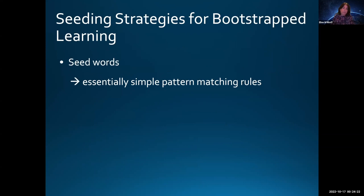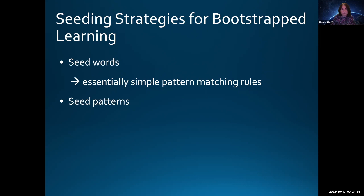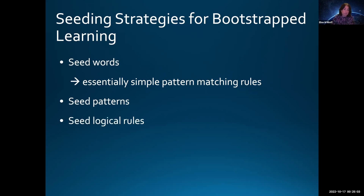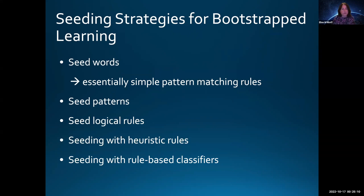Bootstrap learning strategies have to get started with some human data, and that's where the rules come in. There are many different strategies that have been used. One of the most common is seed words—that's really just a very simple rule: if I find this word in a certain context, I'm going to assign a label based on the label that the word had. There are also bootstrap learning methods that begin with patterns, logic rules, heuristic rules, and even rule-based classifiers developed by hand.